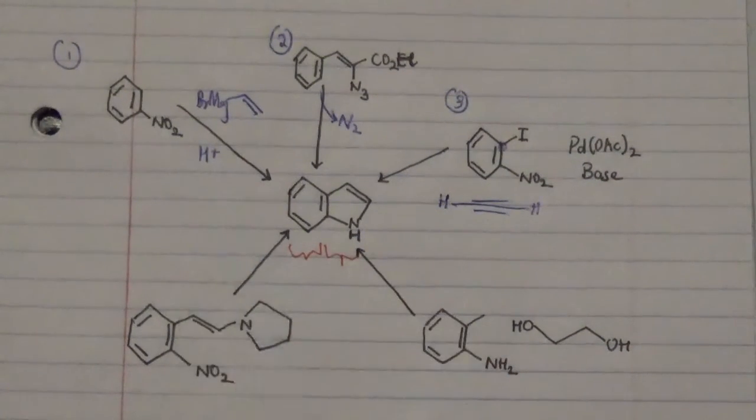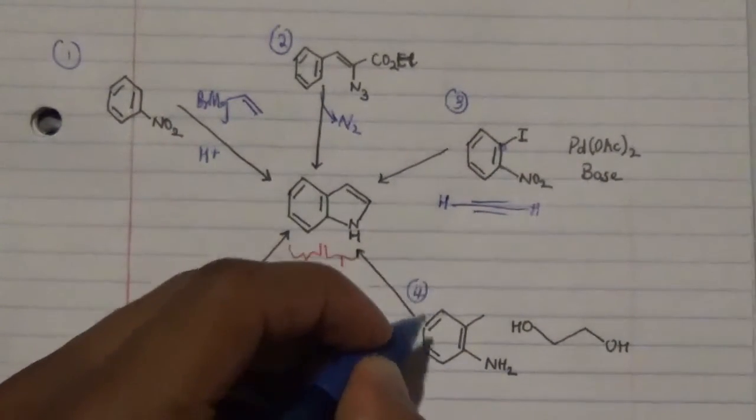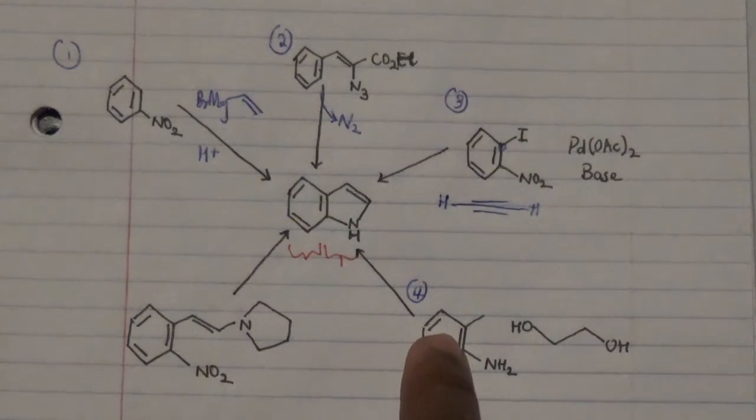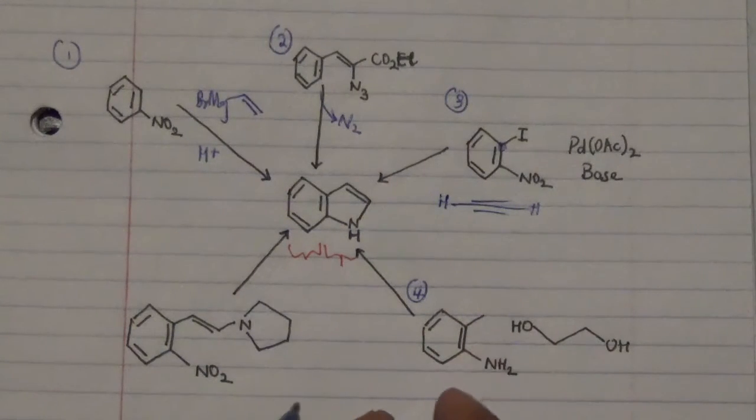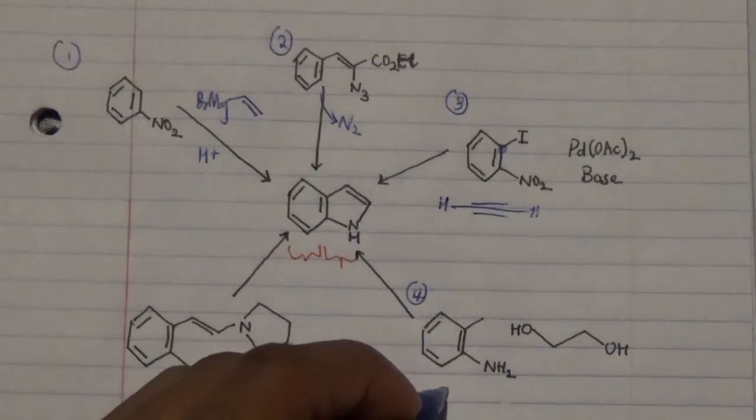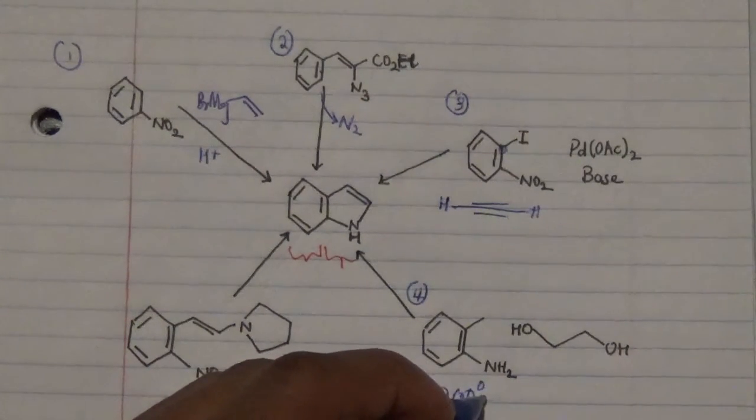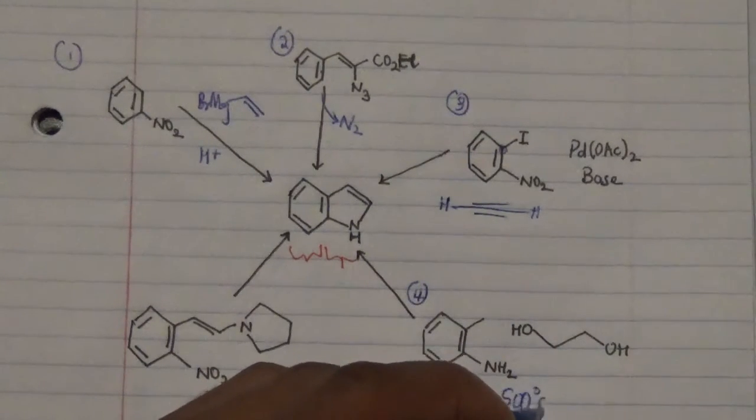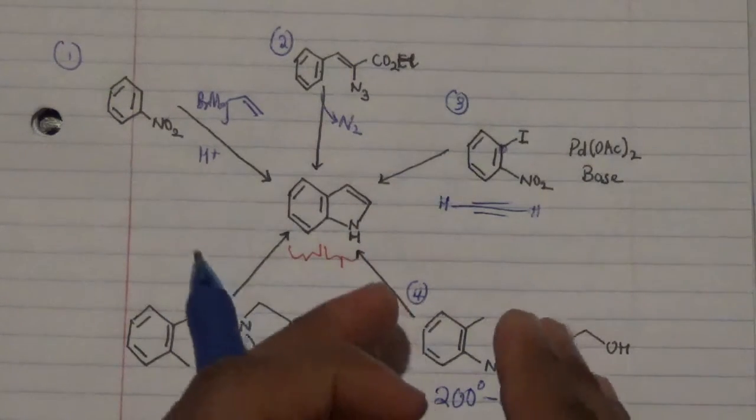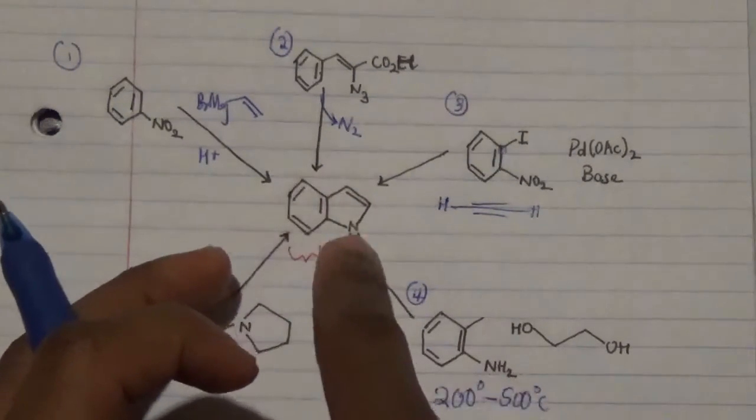Number four is by using a corresponding alkyne that is this particular reagent, and by subjecting this to a vapor phase reaction with ethylene glycol, which is this particular reagent. This has to be done between 200 degrees Celsius and 500 degrees. That is really a huge temperature to actually force this reaction to form this particular product.